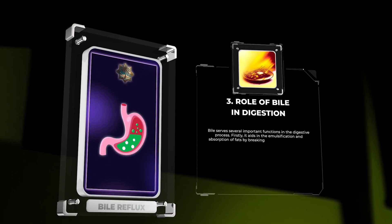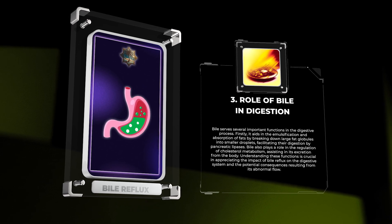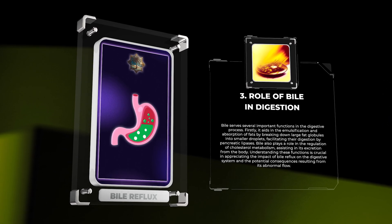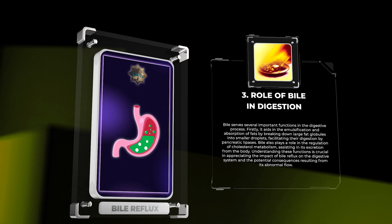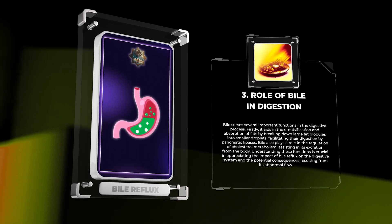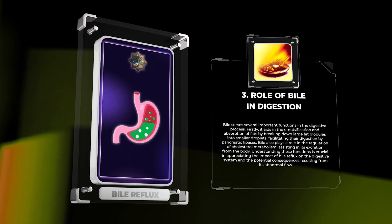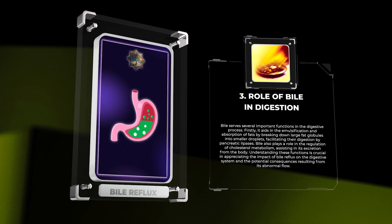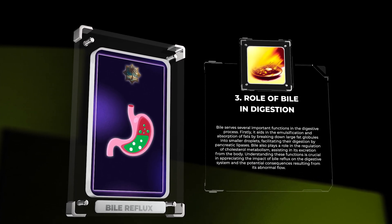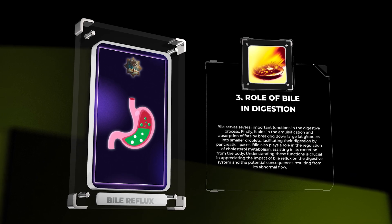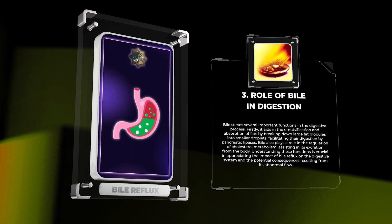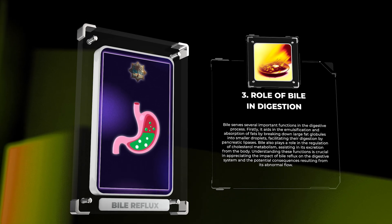We will explore the intricate mechanisms involved in the regulation of these sphincters and how impairment in their function can contribute to bile reflux. Bile serves several important functions in the digestive process. Firstly, it aids in the emulsification and absorption of fats by breaking down large fat globules into smaller droplets, facilitating their digestion by pancreatic lipases. Bile also plays a role in the regulation of cholesterol metabolism, assisting in its excretion from the body.